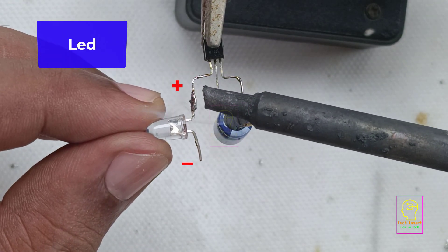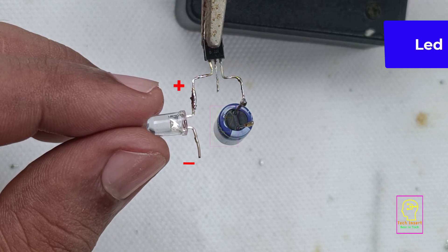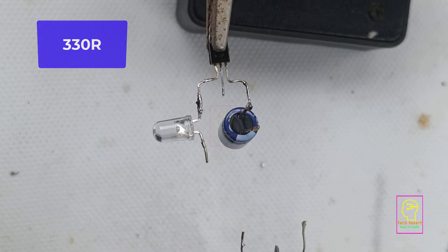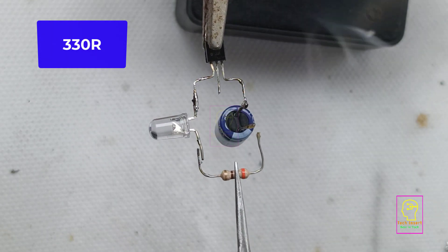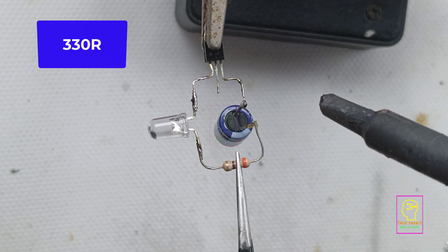After that we will be parallelly connecting a 220 microfarad capacitor along with this 100 microfarad capacitor to form a 330 microfarad capacitor and we will test the circuit. Then you will understand how the capacitance is having influence in the flashing of this LED.